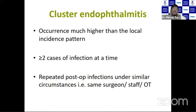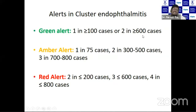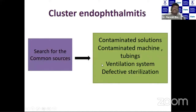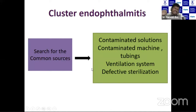Cluster endophthalmitis is the occurrence of cases much higher than the local incidence pattern. More than two cases of infection at the same time under similar circumstances — same surgeon, same OT, same staff — constitutes cluster endophthalmitis. Alert levels: green alert if more than 1 in 100 or 2 in 600; amber alert if 1 in 75, or 2 in 300–500, or more than 3 in 700–800; red alert if more than 4 or 2 in 200 cases. An unusual organism makes it easier to trace the source of infection.